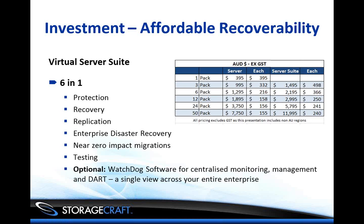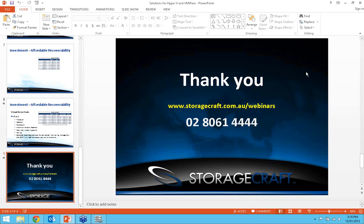The optional Watchdog software provides centralised monitoring, management, and daily automated recovery testing. The 25-pack of Watchdog Essentials, which covers up to 25 machines, is around $500 to $600 RRP. The Watchdog Pro Edition, for up to 100 client access licenses to monitor up to 100 machines, is around the $1,000 mark. If you'd like further information or pricing, feel free to get in touch with your reseller or distributor. Thanks very much for tuning in today — I certainly hope you got a lot out of this demonstration.